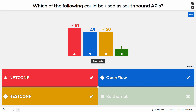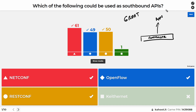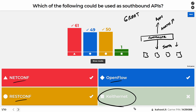So we talk about application programming interfaces. A great way of remembering northbound and southbound APIs is to think of having a controller in the middle. If it's communicating with us — the admins, our apps, things we use to identify what we want to have happen — that would be using northbound APIs, because it's above. And then if that controller is talking with network edge devices, it would be using southbound APIs because it's down below. The options here are OpenFlow, RESTConf, NetConf, and 'Keith or Nat,' which hasn't quite made the standard yet.